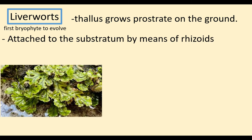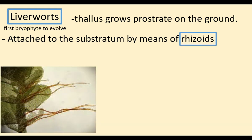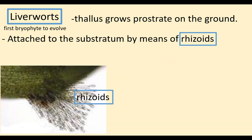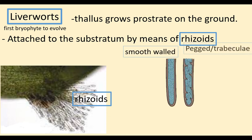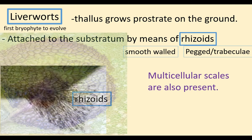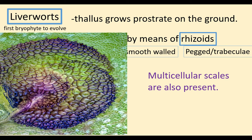The gametophyte body is attached to the substratum by means of rhizoids. Rhizoids are root-like structures that attach the plant body to the substratum. They do not absorb water or nutrients — their main function is fixation. Liverworts have two kinds of rhizoids: smooth-walled rhizoids and pegged or trabeculate rhizoids. Multicellular scales are present on the ventral side and protect newly growing parts.